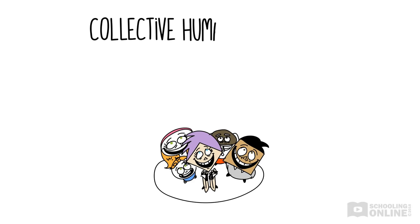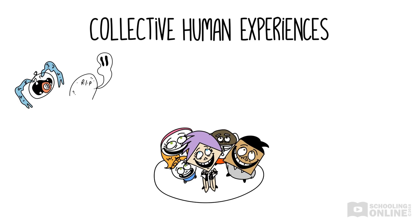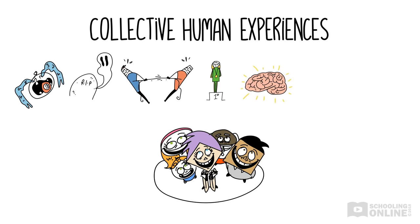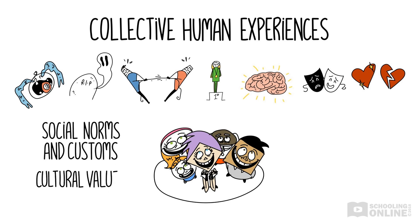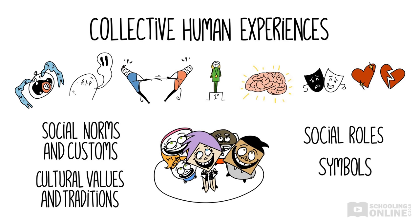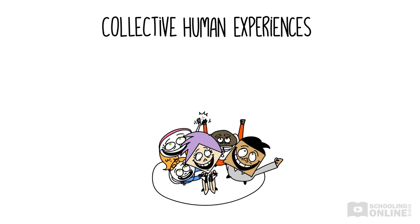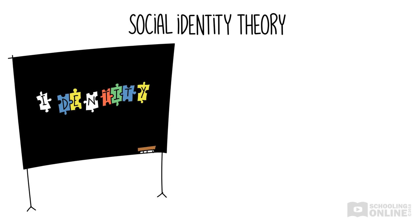On the other hand, collective human experiences are situations and events that are shared by groups of people, nations and cultures or all of humanity. We human beings are social creatures so we share lots of experiences with others, including social norms and customs, cultural values and traditions, social roles, symbols and languages. Collective experiences help us to relate to others and to be understood. Many communities value highly their collective experiences and identity. Think about Aboriginal and Torres Strait Islander peoples who are often very proud of their heritage as the first peoples of Australia. Like individual experiences, collective human experiences shape our identity. Social identity theory proposes we derive aspects of our identity from the experiences we share with others and the groups we are part of, giving us a sense of belonging to the social world.